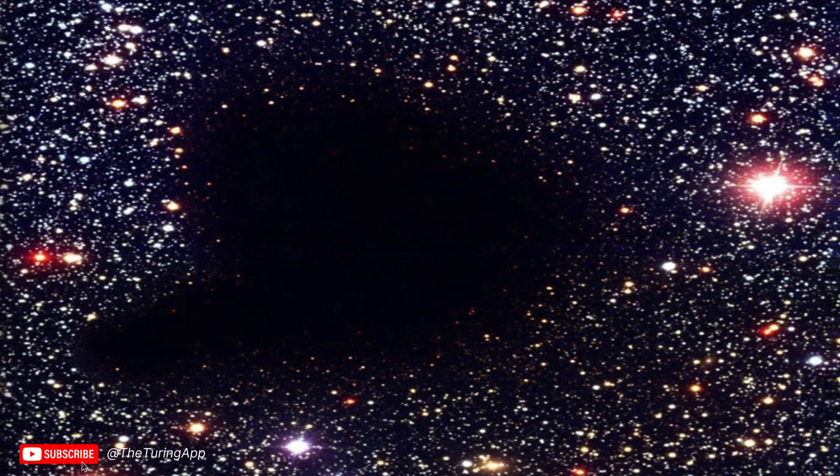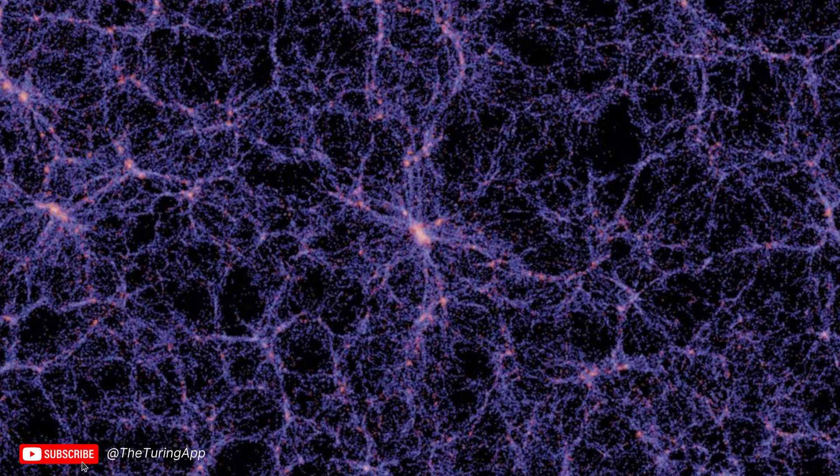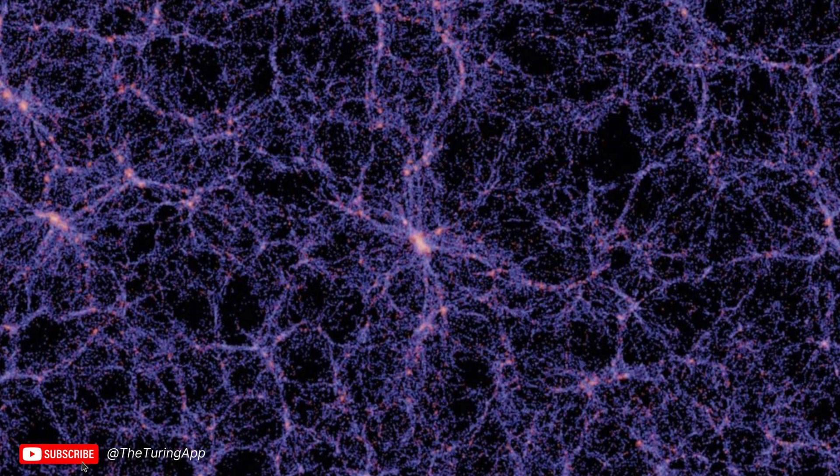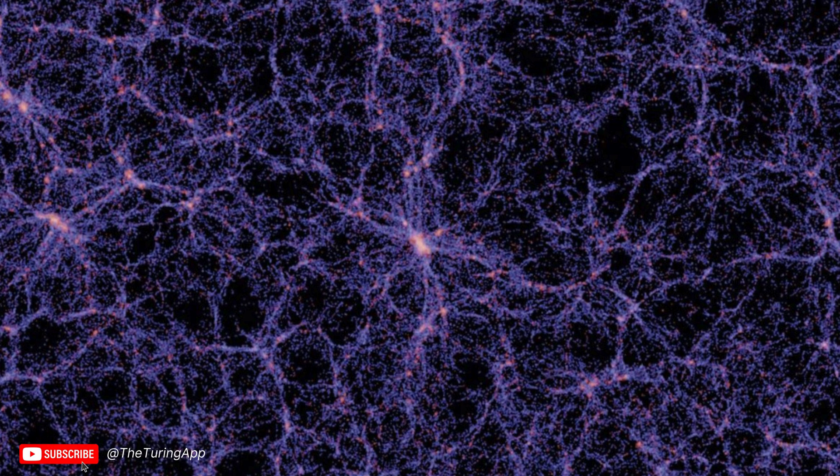Among these voids, one stood out: the Boötes Void, discovered in 1981. Spanning a staggering 330 million light-years, this cosmic desert was unlike anything astronomers had ever encountered. Within its immense volume, researchers found only about 60 galaxies. By comparison, a region of that size should contain thousands. Its emptiness is so profound that some have nicknamed it the Great Nothing. Astronomers were stunned. How could such a massive region be so empty? Was the Boötes Void simply a natural phenomenon, or did something extraordinary shape this cosmic desert? Some even speculated that the Void could be the result of advanced civilizations clearing regions of space, a hypothesis that, while speculative, highlights just how mysterious this Void remains.